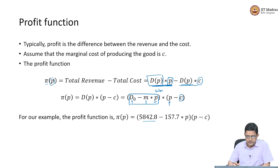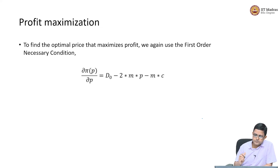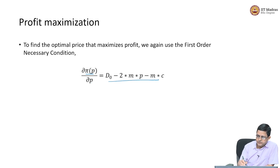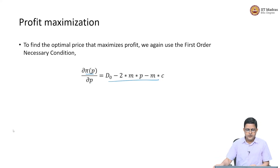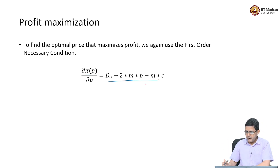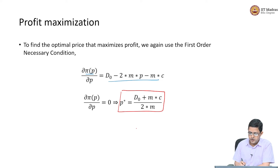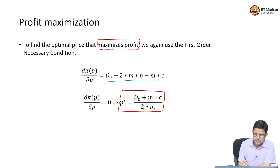How are we going to maximize this profit function? Very similar to before — we are going to use the first-order necessary condition: take the partial derivative of profit with respect to price and set it equal to zero. Taking the partial derivative of the profit function with respect to price gives an expression you can verify. The optimal price is given by P* = (D₀ + M times C) divided by (2 times M). This is the price that maximizes profit.